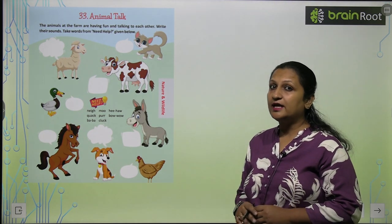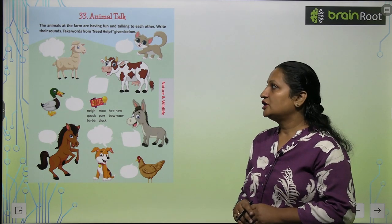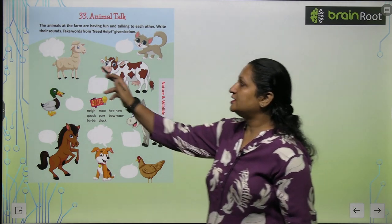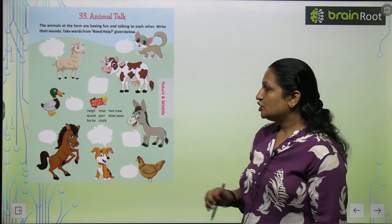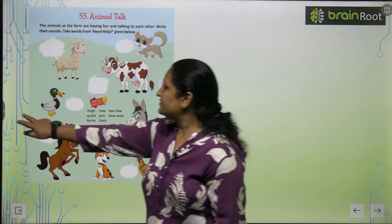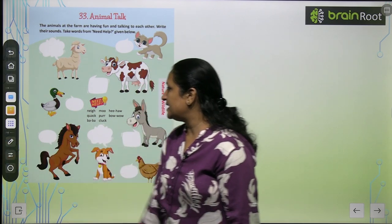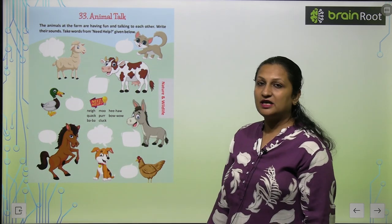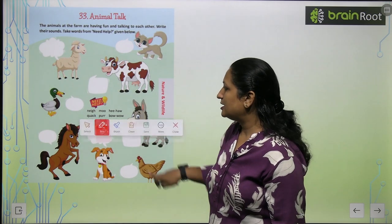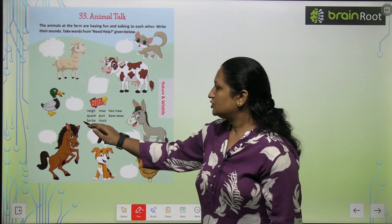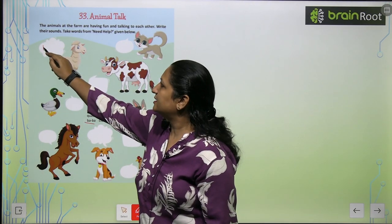Let's see which animal makes which sound. The first animal is a sheep. What does a sheep sound like? Sheep करती है — बाबा. So you will write 'Baa' here.